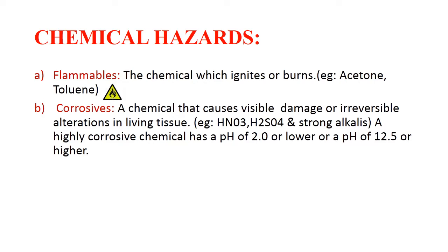Corrosive: a chemical that causes visible damage or irreversible alterations in living tissue if it comes in contact with the skin. Examples are nitric acid, sulfuric acid, and strong alkalis. A highly corrosive chemical has a pH of 2 or less, or a pH of 12.5 or more. This is the logo for corrosive substances.